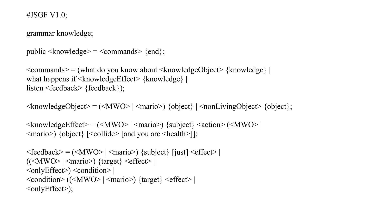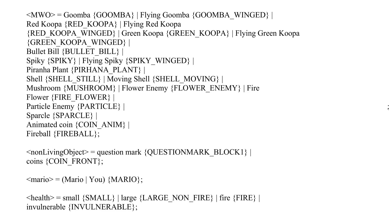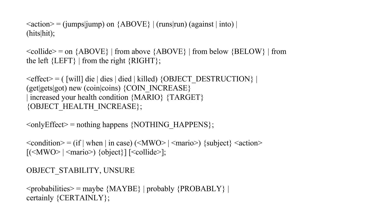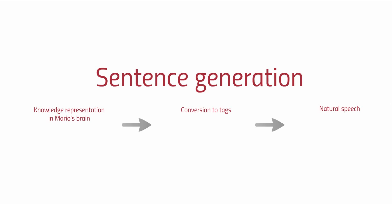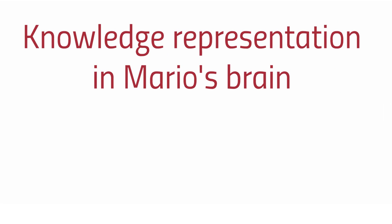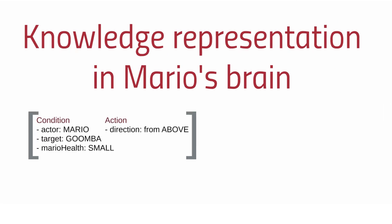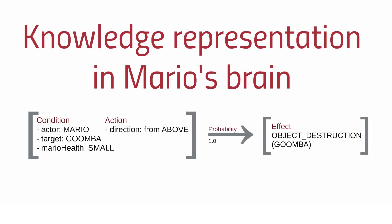Mario's speech generation is based on linguistic principles of syntax and phonology combined with Mario's world semantics. The world semantics are represented by means of schema-based interaction rules, which specify an actor — typically Mario — a target, for example Goomba, other possibly important preconditions such as Mario's health, the type of interaction such as from above, the expected effect of the interaction such as object destruction of Goomba, and a certainty estimate such as 1.0 for full certainty.